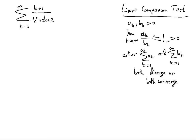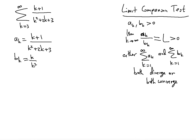So a_k is going to be (k+1) divided by (k²+2k+3). Now b_k will be the related sequence. Notice that as k gets larger and larger, the dominating terms in the numerator and denominator will be k and k², so you're talking about k divided by k² as the dominating parts. As k gets larger and larger, this fraction will start to look more like k over k², so the terms 1, 2k, and +3 will not significantly affect the value of a_k.